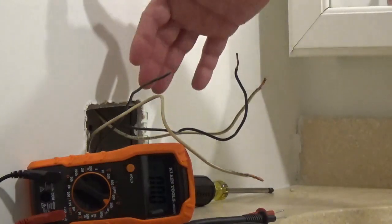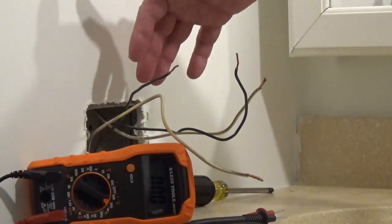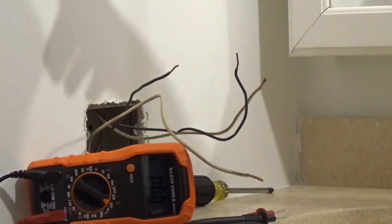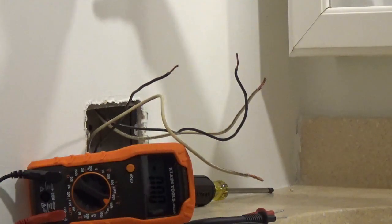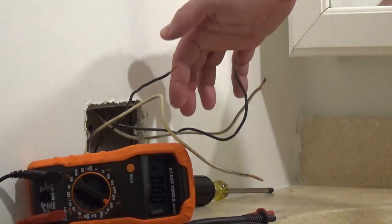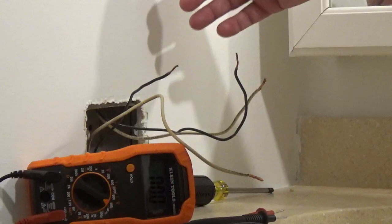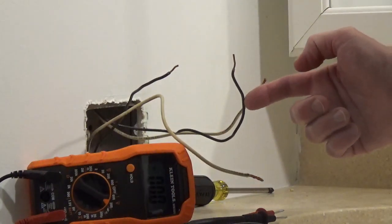If you have four wires plus a ground or four wires with no ground wire, you're going to be using the line and the load side. For this, we're going to have to test to find which pair of wires are coming from the service panel. So we're going to be testing to find a hot wire.